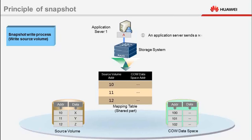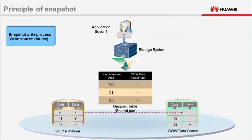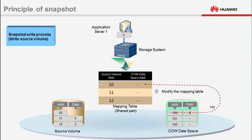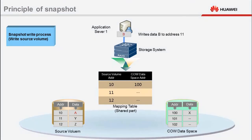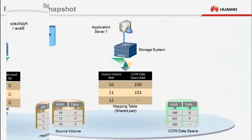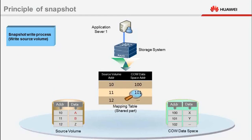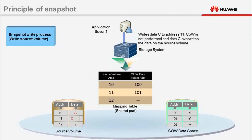For example, in a snapshot period, when Application Server 1 sends a request to write data A to source volume address 10, the storage system uses the COW technology to copy data X to the COW data space, modifies the mapping in the shared part of the mapping table, and writes data A to source volume address 10. The storage system performs the same operations when data is written to an address for the first time. When a host sends a request to write data C to the same location, the storage system queries the mapping table and detects that the source data at the location has been copied to the COW data space. Therefore, COW is not performed and data C overwrites the data on the source volume.